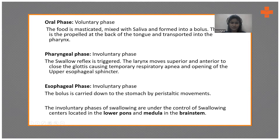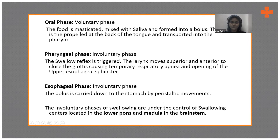The third is the esophageal phase, which is also an involuntary phase. The bolus is carried down to the stomach by the peristaltic movement of the esophageal muscles. The involuntary phases of swallowing are under the control of swallowing centers located in the lower pons and medulla in the brainstem.